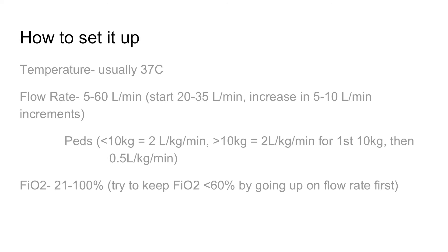So to summarize: temperature 37 degrees Celsius. For an adult, start 20 to 35 liters and go up or down. For FiO2, I'd probably start around 40 to 50%, then go up and down based on what you need.